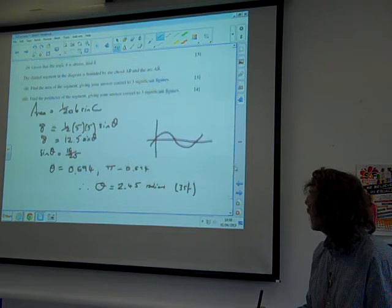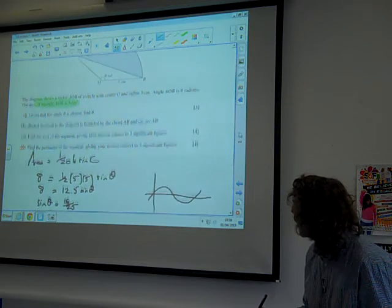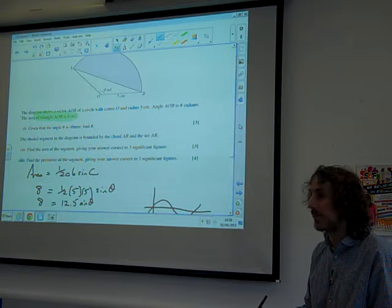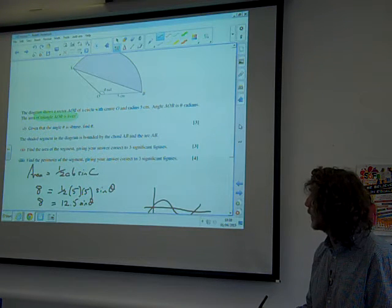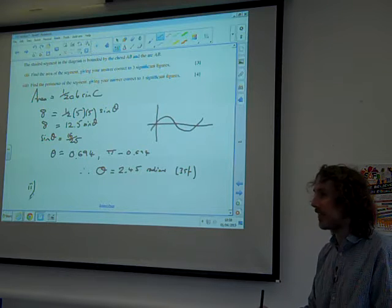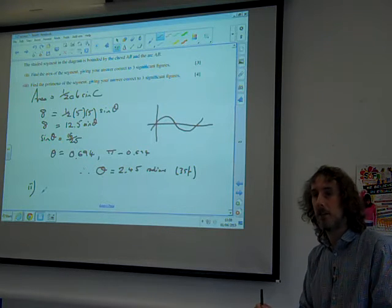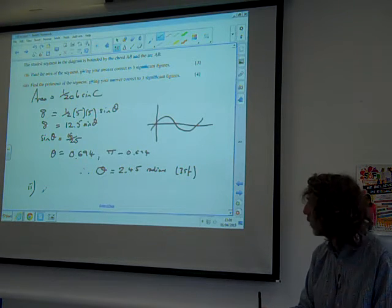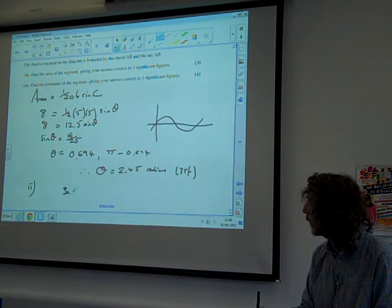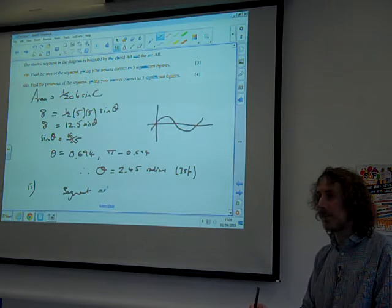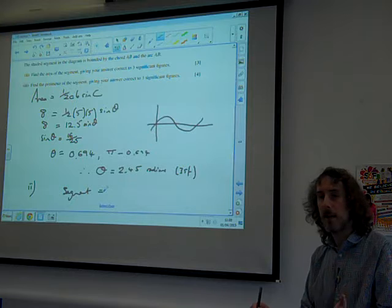The shaded segment in the diagram is bounded by the chord AB and the arc AB. Find the area of the segment, giving your answer correct to three significant figures. The segment is what we get if we do the whole area of the sector, take away the area of the triangle. So the segment is the area of the sector.